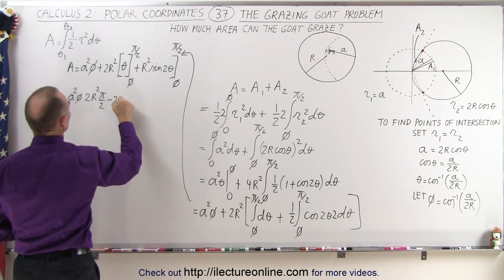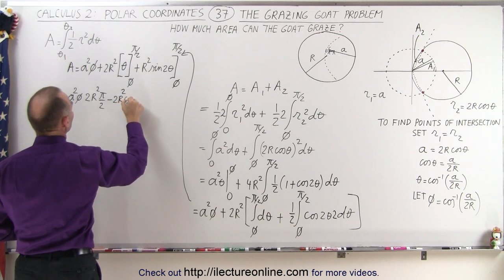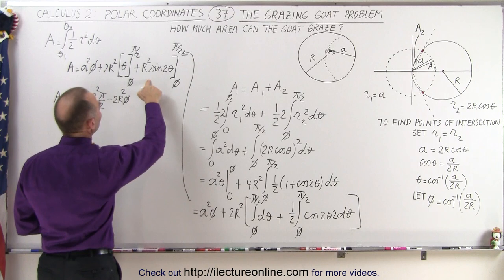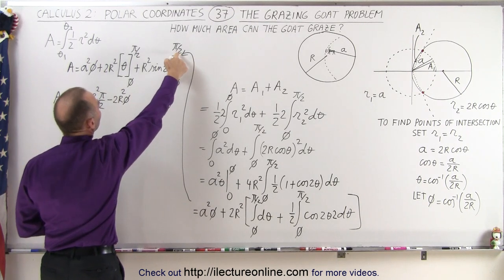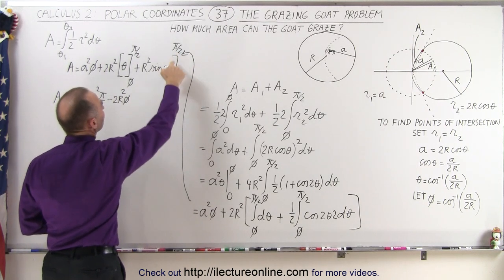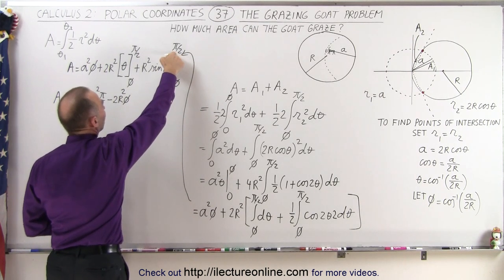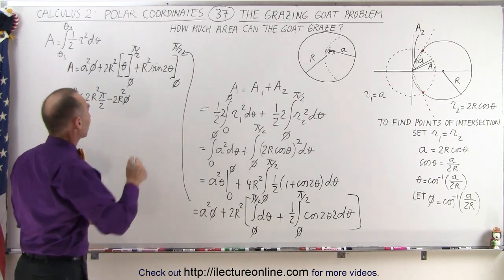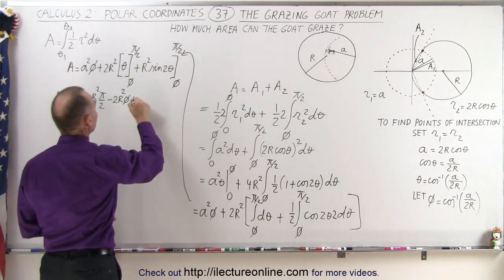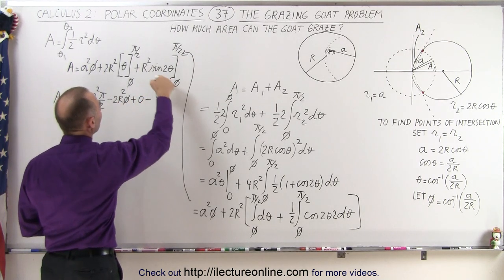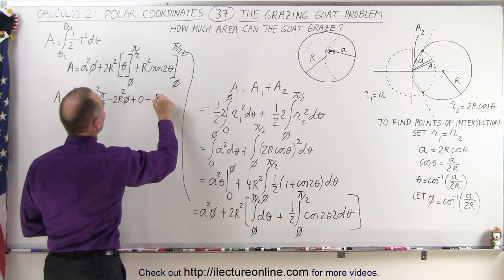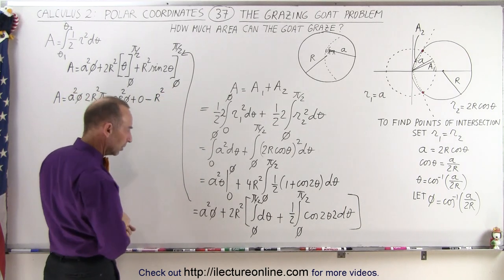...gives 2R squared times φ. Then for the sine term: plugging in the upper limit, 2θ evaluated at π/2 gives π, and sin(π) = 0, so that term is plus 0. Minus — plugging in the lower limit — we get R squared times...